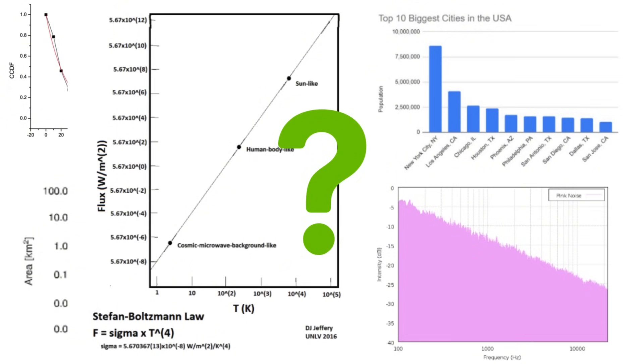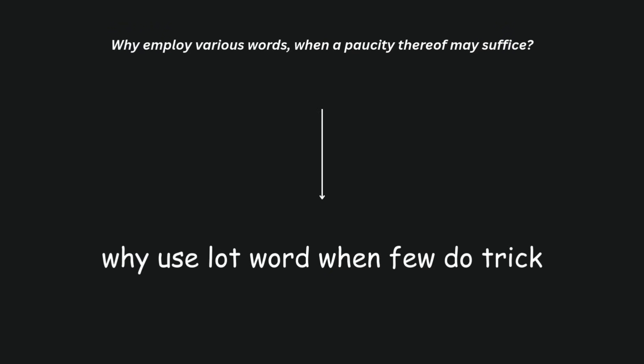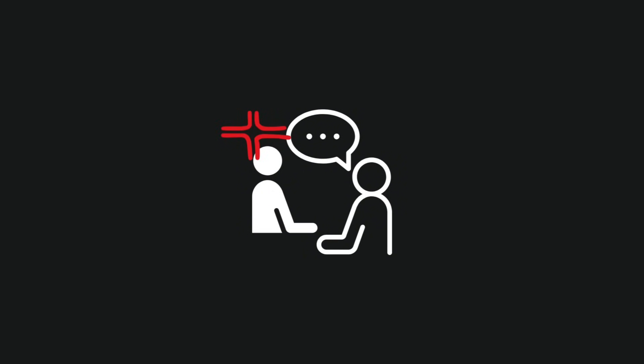There are a bunch of ideas that regularly float around. For example, one that Zipf himself proposed is that it could have to do with the principle of least effort — the broad theory that animals will naturally choose the path of least resistance or effort. The idea would basically be: why use a lot of words when few words do the trick? He reasonably proposed that, in general, neither speakers nor listeners want to work any harder than necessary to reach understanding, and this desire for common intelligibility is what leads to the observed Zipf's distribution, where uncommon words aren't often used in favour of more understandable ones.